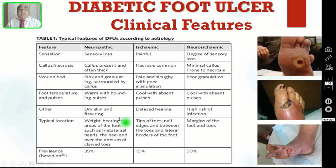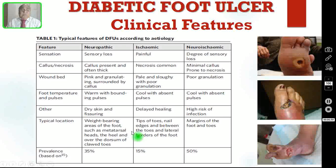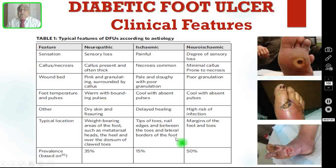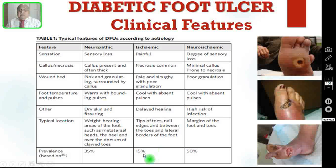Other features: in neuropathic, there will be dry skin and fissuring; in ischemic, the feature is delayed healing of the ulcer; in neuro-ischemic, high risk for infection. Typical location: neuropathic is usually over weight-bearing areas such as metatarsal heads, the heel and over the dorsum of clawed toes. In ischemic, the typical location is the tip of the toes, nail edges, between the toes and lateral borders of the foot. In neuro-ischemic, the characteristic site is margins of the foot and toes. In prevalence, neuropathic ulcer is seen in 35%, ischemic in 15%, and neuro-ischemic is the commonest variety comprising 50% of diabetic foot ulcers.